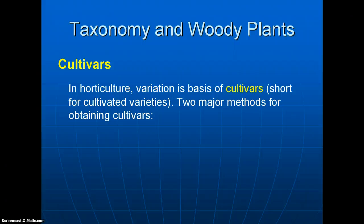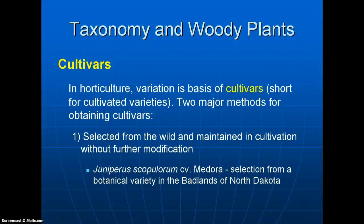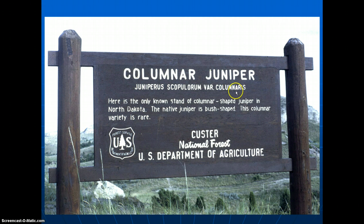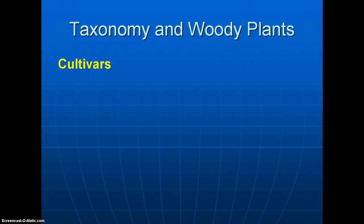In horticulture, we also see variation as the basis of cultivars — short for cultivated variety. There are two major methods for obtaining cultivars. One is to select something from the wild and keep it in cultivation by cloning it through vegetative propagation. A good example is Rocky Mountain Juniper, Juniperus scopulorum, the cultivar Medora, selected from a botanical variety in the Badlands of North Dakota and then propagated clonally so every individual is identical.